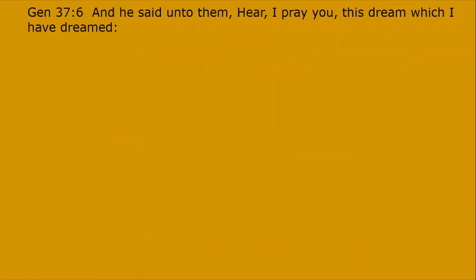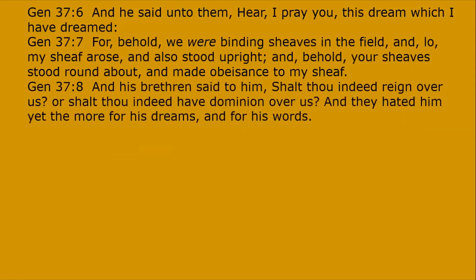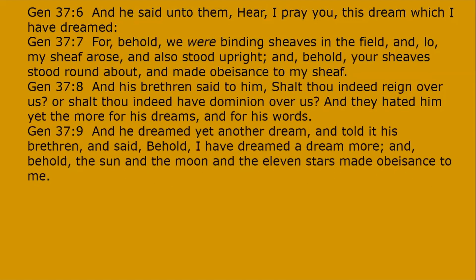Now we're going to read the story of the dream of Joseph when he was 17 years old, Genesis 37:6. He said unto them, 'Hear, I pray thee, this dream which I have dreamed.' He's talking to his brothers. 'Behold, we were binding sheaves in the field, and the sheaves arose and stood upright, and behold, they stood around about and made obeisance to my sheaf.' His brethren said, 'Shall thou indeed reign over us?' and they hated him more for his dreams. Then he dreamed another dream: 'Behold, the sun, moon, and the 11 stars made obeisance to me.'